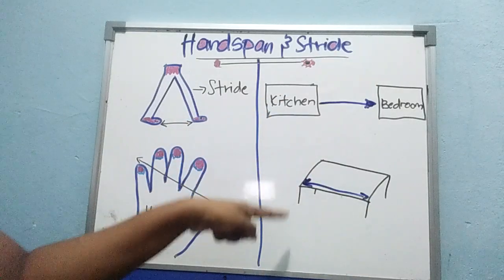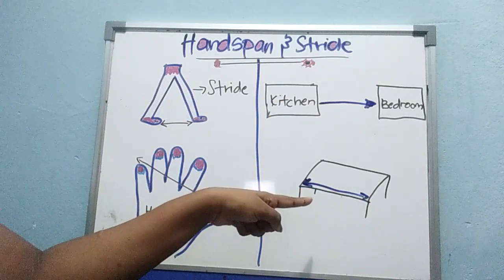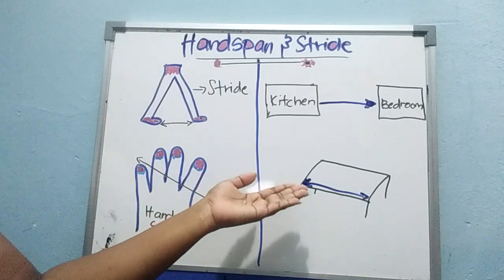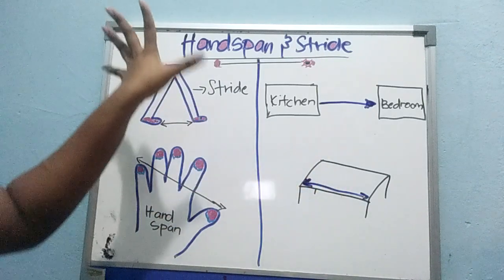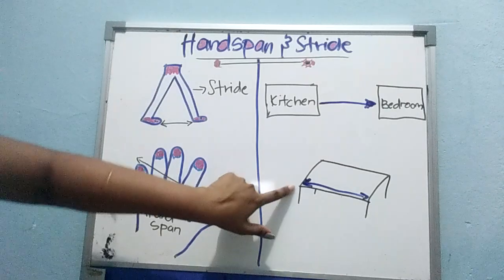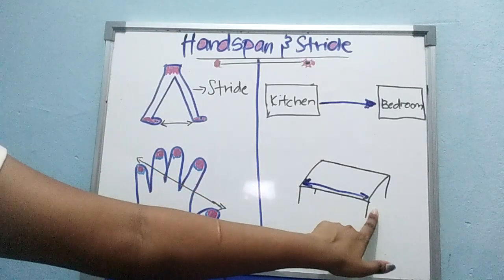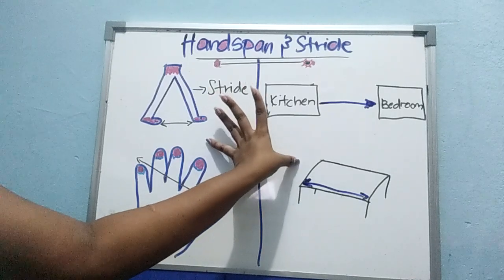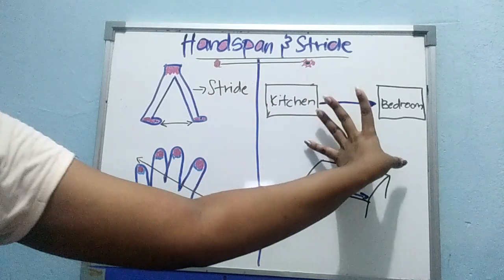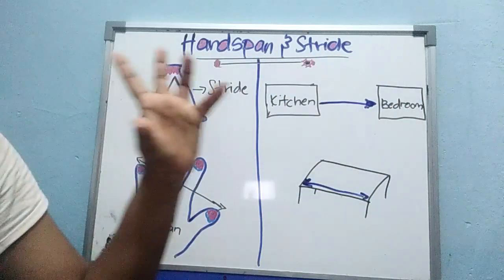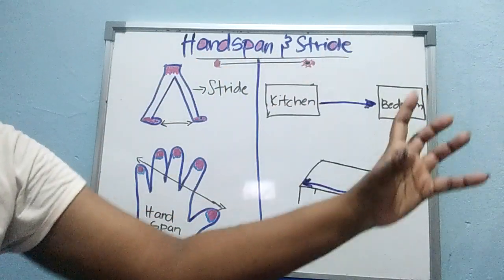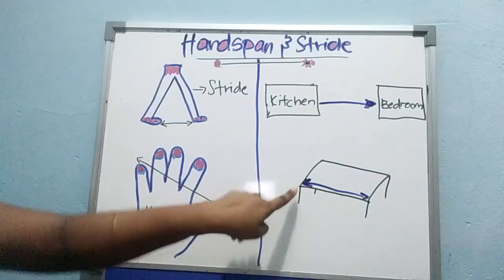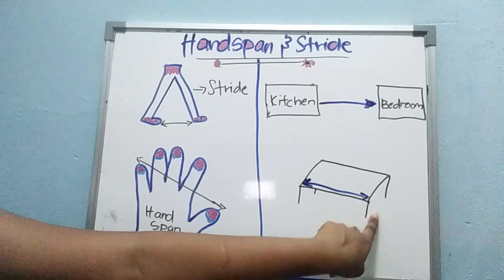Use your hand span to measure the length of the table. Go to your dining table and measure from the first point to the last point. How many hand spans is that? One, two, three, four — like this. One, two, three, four. See how many hand spans it takes from one end of the table to the other.